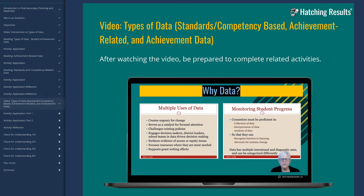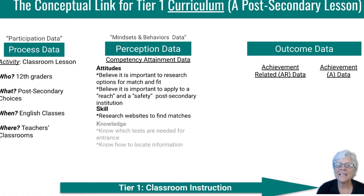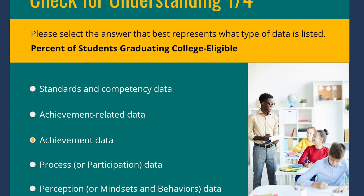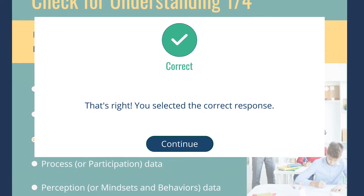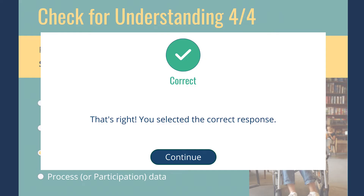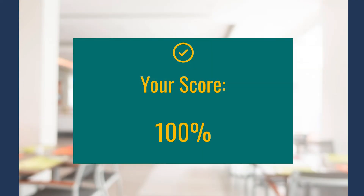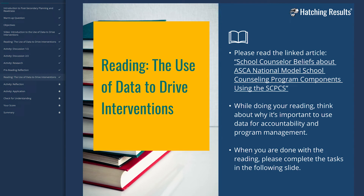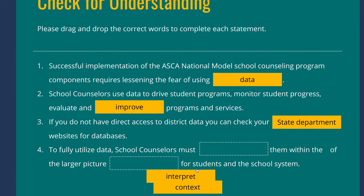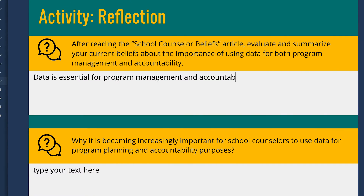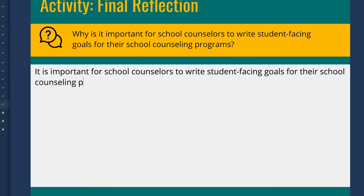In the final lesson, participants will be immersed in learning about the conceptual diagram for school counseling and will learn how to show that their school counseling program is impacting their school's achievement-related and achievement data. With self-graded interactive assessments, narrated video instructions, reading from the text and guides, you will be equipped to use data to make impactful changes for your students and your school through your school counseling program.